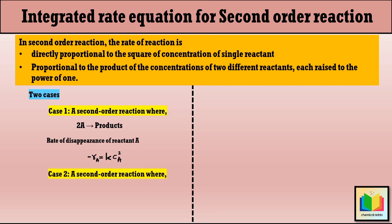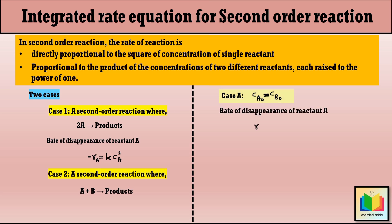Case 2 is a second order reaction where A + B gives products. In this case, the reaction involves two different reactants A and B, and the rate of disappearance of reactant A depends on the initial concentrations of A and B. Based on this, there are two sub-cases. Case A is if the initial concentrations of both reactants A and B are equal — that is, if CA0 = CB0 — then -rA = kCA², which behaves just like Case 1 where only one reactant is involved.